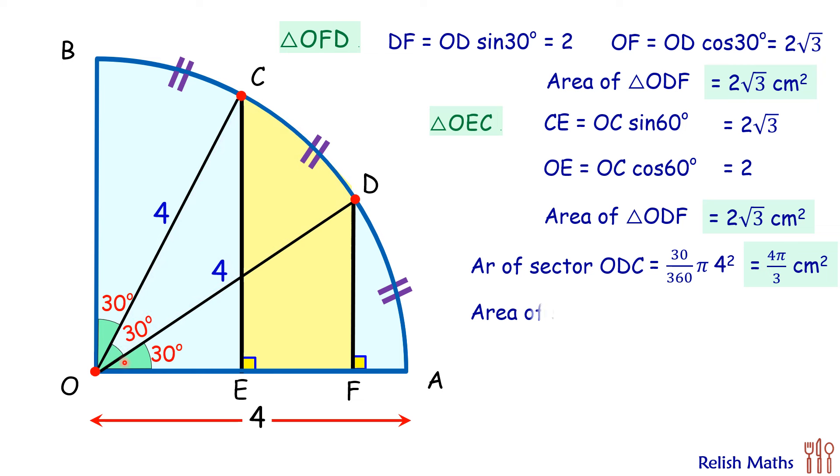Now area of shaded region, that is this yellow region. For that we will add the area of OFD, add the area of sector ODC, and from these two areas we will subtract the area OEC. When we subtract area OEC, what is left is the area of this yellow shaded region, which is 4 pi by 3 cm square.